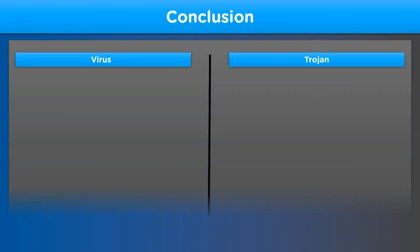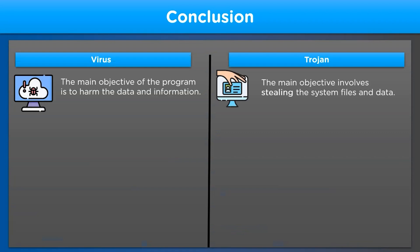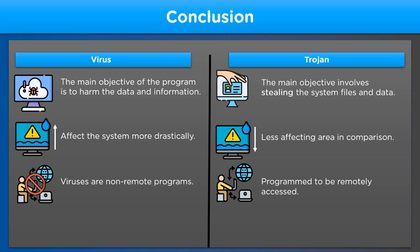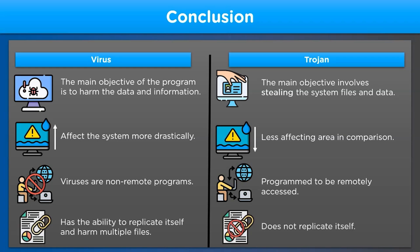Now that we've reached the end of the video, let's recap what we learned. The main objective of a virus is to harm data and information in a system, whereas a trojan's goal is stealing data files and information. The effect of viruses is more drastic compared to trojan horses. Viruses are non-remote programs, whereas trojan horses are remotely accessed. Finally, viruses have the ability to replicate themselves to harm multiple files, whereas trojans do not have replication ability.